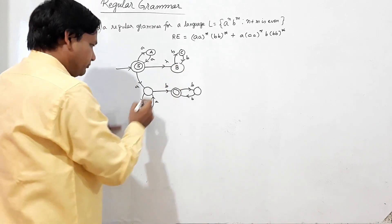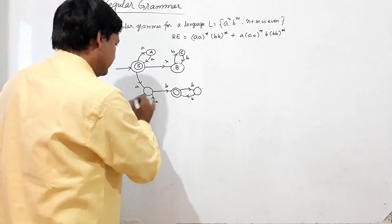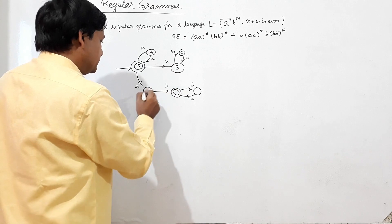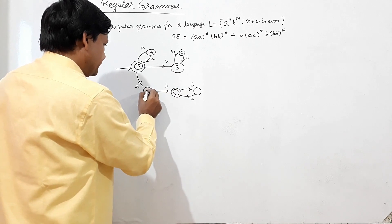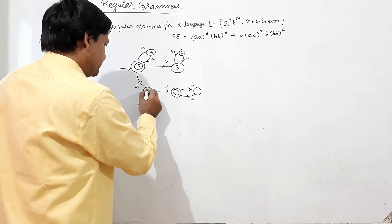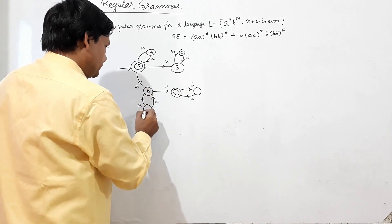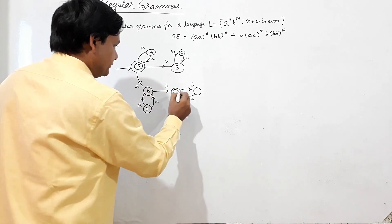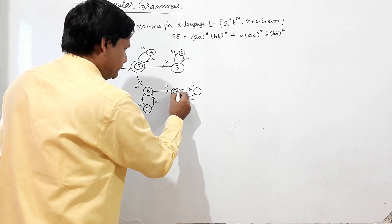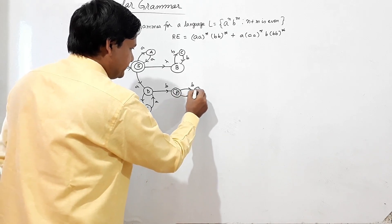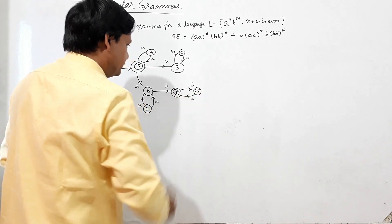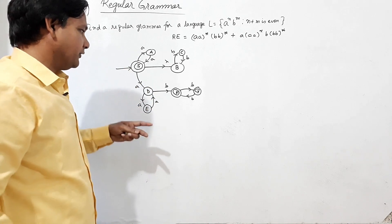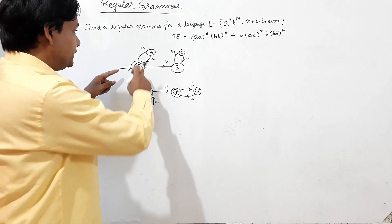Writing the names of the states: this is D, this is E, this is F, and this is G. So S and F are the final states.